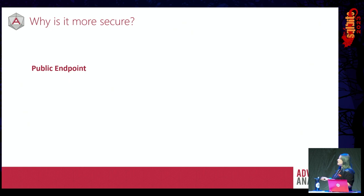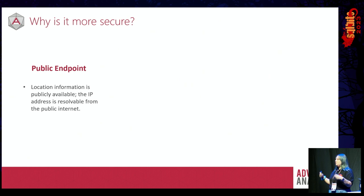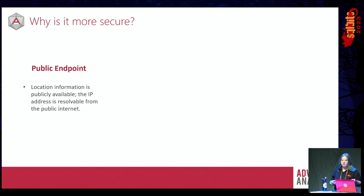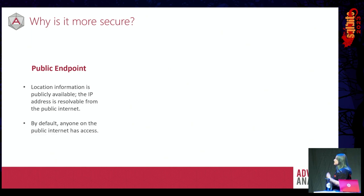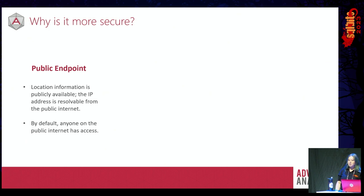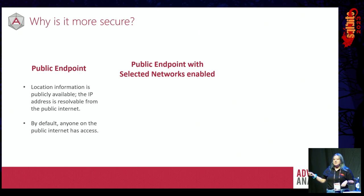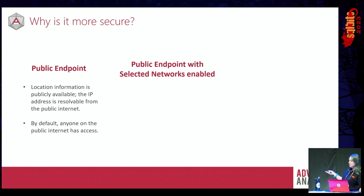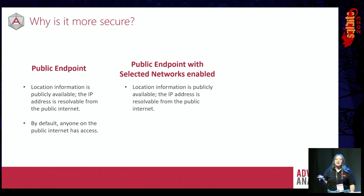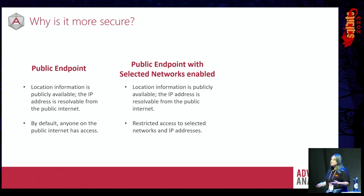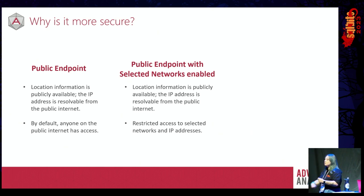With a public endpoint, because it's represented by a public IP address, the location information of that endpoint is publicly available — you can look up the public IP address associated with any particular endpoint, and it's resolvable from the public internet. By default, if you don't apply any firewalls or restrictions, anyone can access it. There's also a public endpoint with selected networks enabled option, which is slightly more secure but still uses the public endpoint, so the location information is still publicly available. It's like a guest list only situation — if your name's not on the list, you're not getting in. But it's still not as secure as using a private endpoint.